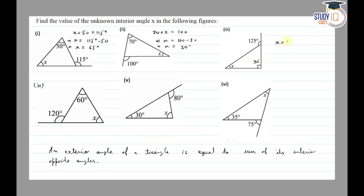In the third figure: x plus 90 is equal to 125. So x is equal to 125 minus 90, which gives x equal to 35 degrees.